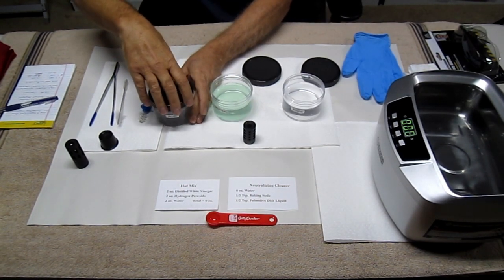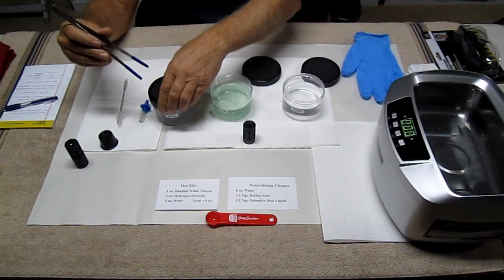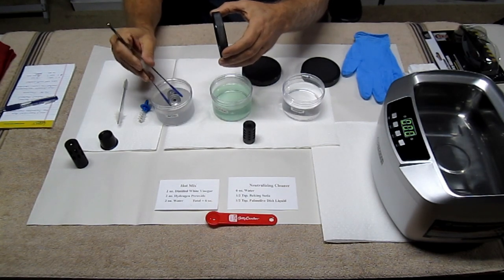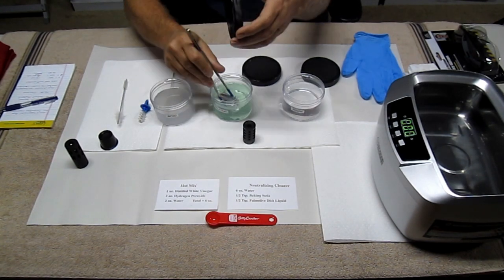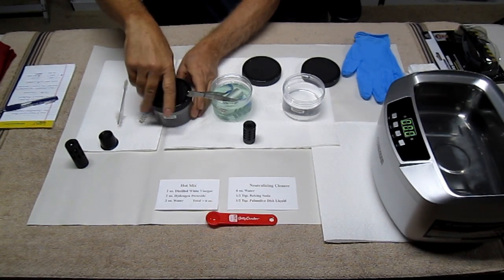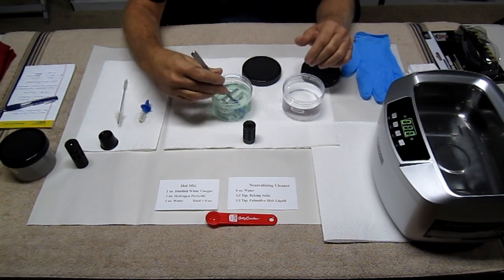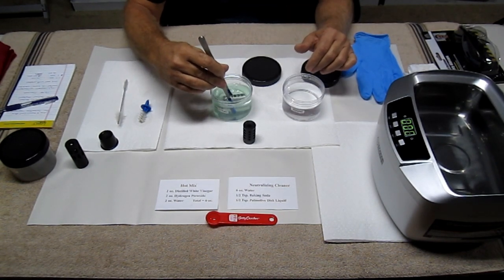So I'm going to, with my stainless steel PVC tip tweezers, remove the compensator directly into the neutralizing solution. Get that lid back on. Do not breathe it. Also make sure you're in a well ventilated room. No pets or children around.